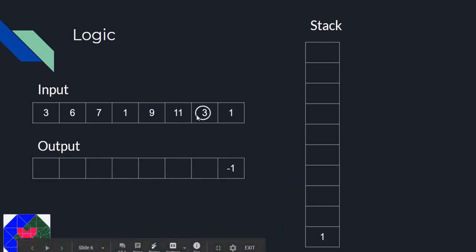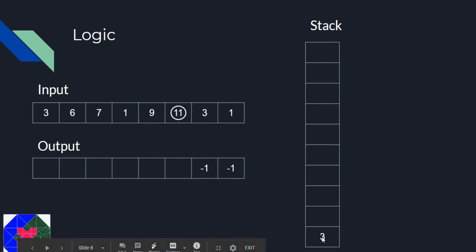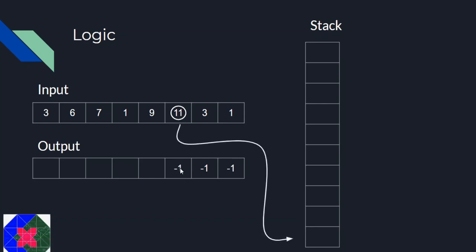For the next input, which is 3, we pop elements from the stack until we find something greater than 3. We pop 1 first, then see there is no element left, so we write minus 1 and push 3 into the stack. For 11, same logic applies — we pop 3, the stack becomes empty, so we write minus 1 and push 11 into the stack.